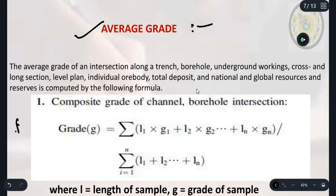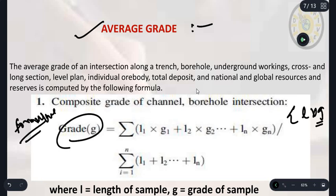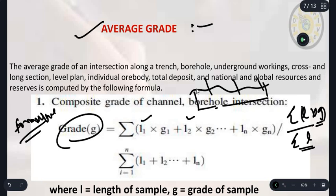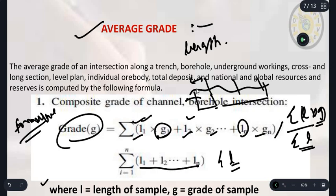The formula is: average grade is the summation of the length into grade of sample upon summation of the length of sample. These are the number of trenching samples in which samples get collected. L1 g1 plus L2 g2 plus Ln into gn upon all the summation of the length. L will be the length of sample and g will be the grade of sample if the condition is length and grade are given.